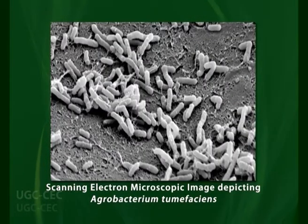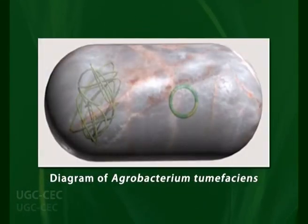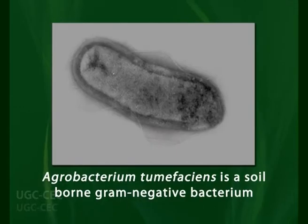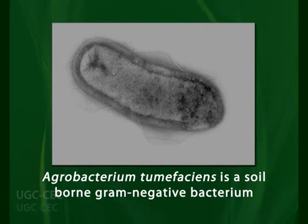Welcome to a lecture on the use of Agrobacterium tumefaciens as a tool for genetic engineering of plants. Agrobacterium tumefaciens is used to introduce desirable DNA into plant cells, and must be modified to be used as a genetic engineer. It is a soil-born gram-negative bacterium with a unique ability to introduce part of its DNA into plant cells, inserting DNA into the nucleus. It is a naturally occurring plant pathogen that has been successfully used for delivering DNA into plants.